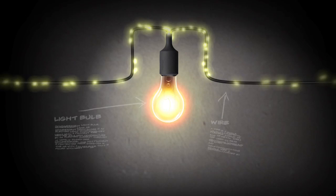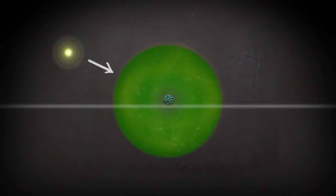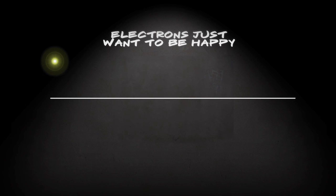So how do you get electrons to move through a wire if they're happy just buzzing around as part of an atom? Well, it turns out that electrons just want to be happy. And for electrons, happiness is being at a lower energy level. Think of it like this.